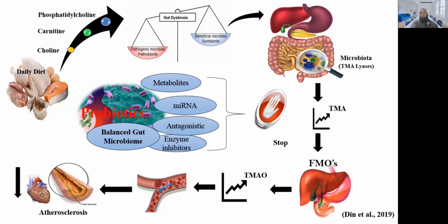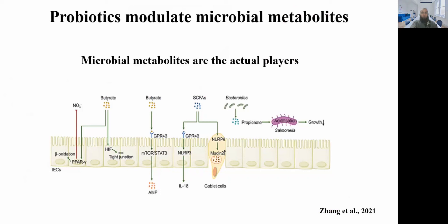Recent articles demonstrated that probiotics modulate microbial metabolites. We can say that when using probiotics, the metabolites are the actual players. A probiotic strain can change microbial diversity; when diversity changes, there will be different metabolite production; and when there are different metabolites, there will be different miRNA production with different targets that can influence host physiology.